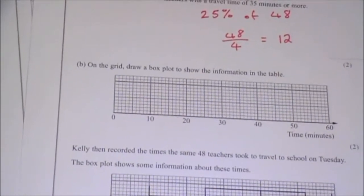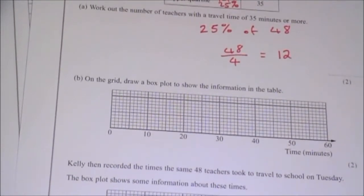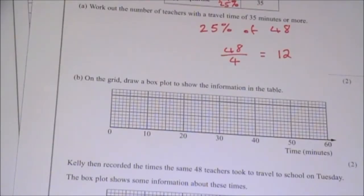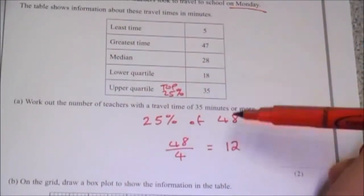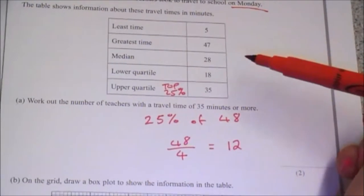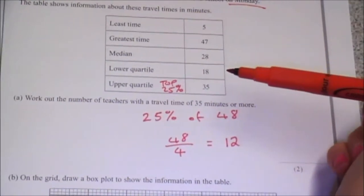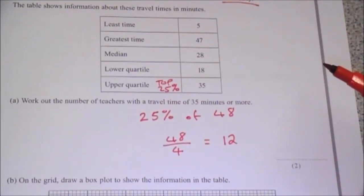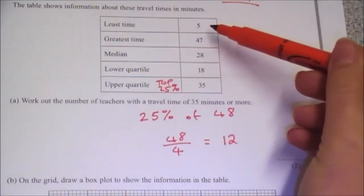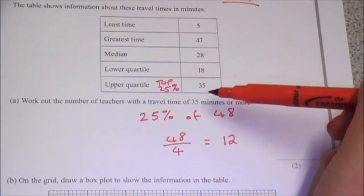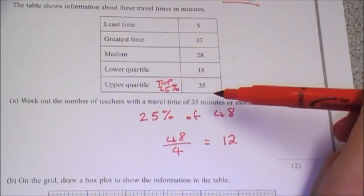Part B wants you to draw a box plot from the information in the table above. They've been very nice and given you all the information there, so this is actually one of the easiest box plot questions you can ever hope for. I just need to draw a line on my grid for each one of these values.